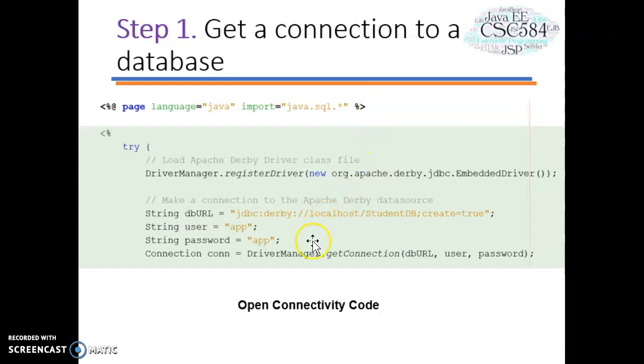Next, we need to initialize a driver so you can open a communication channel with the database. In this application, we're going to use Apache Derby as the database. So we need to create a code something like this. First I create a variable string db url with the information of Apache Derby data source. This is the database name.